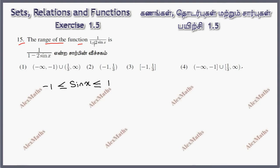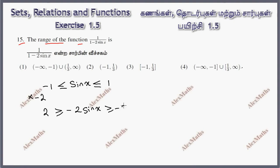Now we have minus 2 sin x. If we multiply through by minus 2, we have a negative number, so multiplication reverses the inequality symbol. Therefore, minus 2 sin x is greater than or equal to minus 2 and less than or equal to 2.